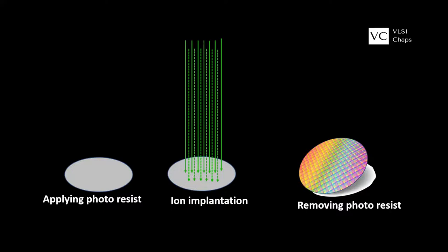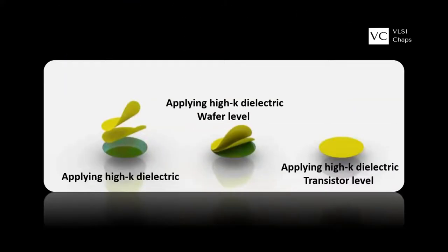For better performance of the transistor, the ideal solution is to increase the dielectric constant K of the gate material. A higher dielectric constant material is used for better transistor performance. High-K stands for high dielectric constant — a measure of how much charge a material can hold. Air is the reference point with a K of 1.0. Silicon dioxide has a K of 3.9. High-K materials such as hafnium dioxide, zirconium dioxide, and titanium dioxide have K values higher than 3.9.